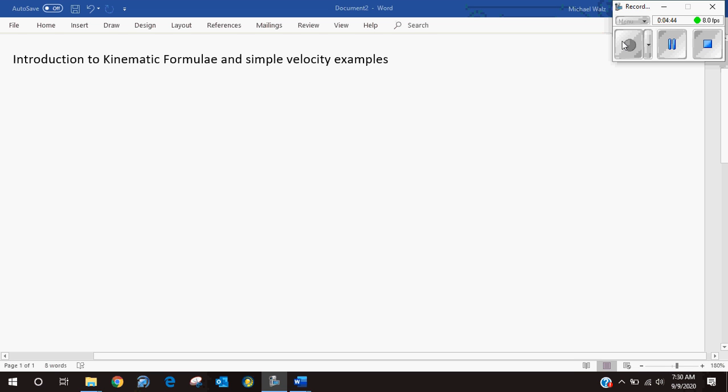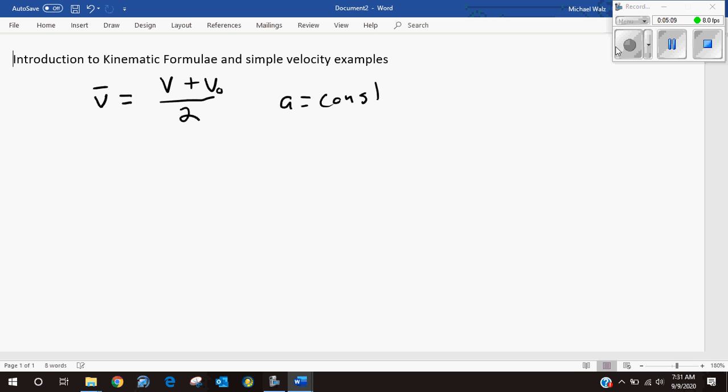I started with those kinematic formulas which are actually built from a couple other things. If we have an average velocity, we can define that a couple different ways. We can say that is final v plus initial v divided by two, assuming that acceleration is constant. One thing I like about this is it's just exactly the way you would think it is in math. You have two numbers and you find the average, and because the acceleration is constant here, we know that this formula works.